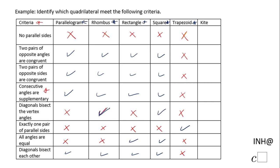I want to be careful about 'consecutive angles are supplementary' for a trapezoid. The two angles along one leg are consecutive and they are supplementary, but the other pair — let's say angles A and B on opposite sides — are not supplementary. So I'll mark that property as false for a trapezoid overall.